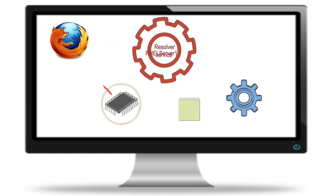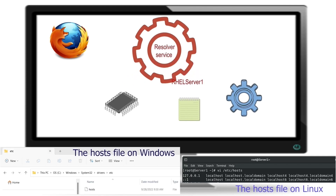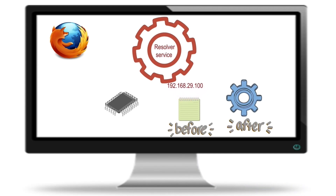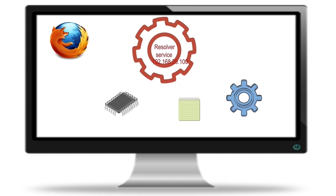If the requested name is not available in the cache, the Resolver service checks the hosts file. All operating systems include a file called hosts. You can use this file to map IP addresses and names. By default, this file has entries only for the local system. In a small network, you can use this file to map names with IP addresses. The Resolver service always checks this file before using the DNS service.